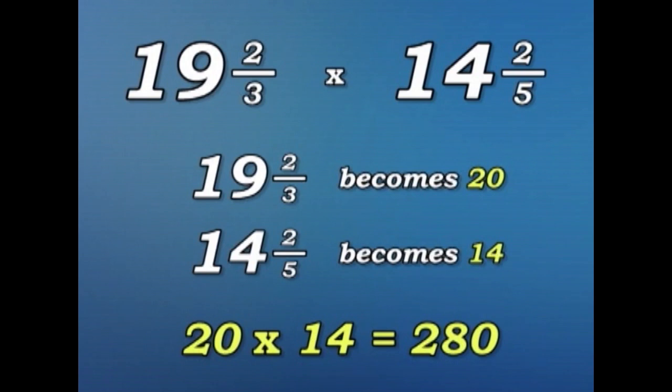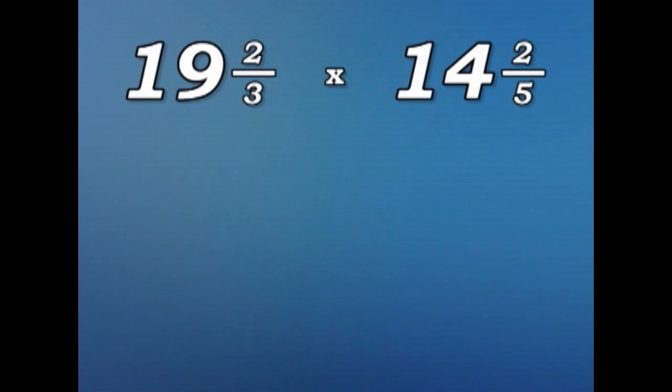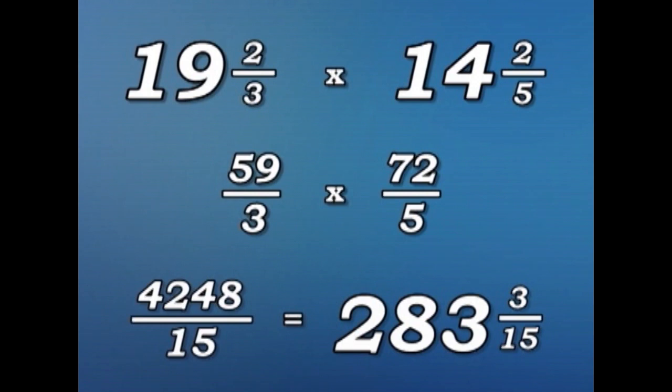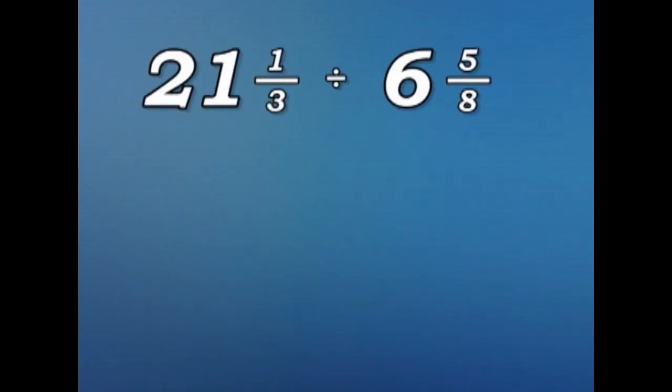Let's see how close we were. We're going to make improper fractions. So, 19 and two thirds multiplied by 14 and two fifths becomes 59 over 3 multiplied by 72 over 5, which becomes 4,248 over 15, which becomes 283 and three fifteenths. And our estimate was 280. So, it wasn't bad.